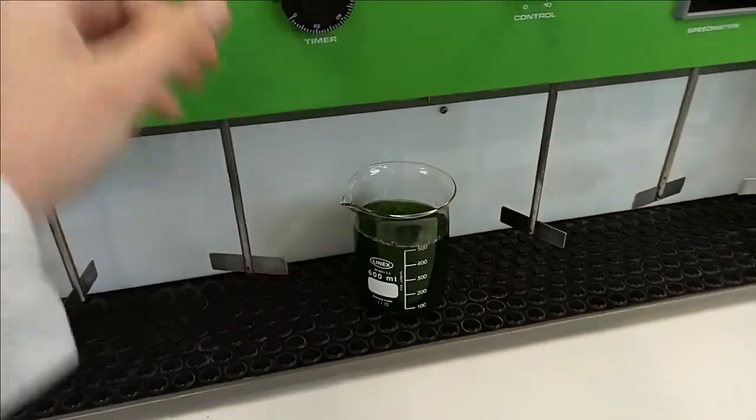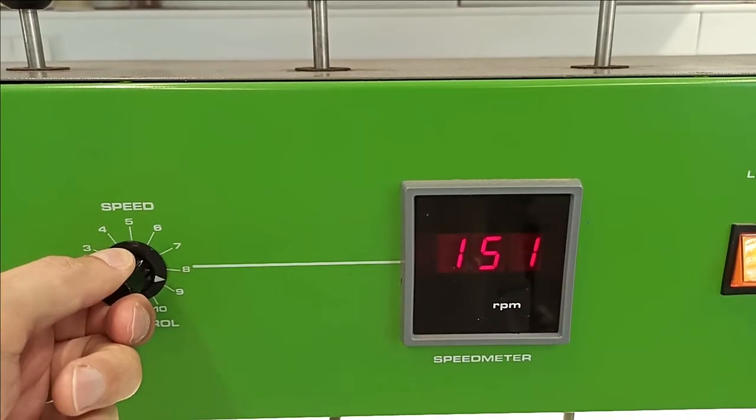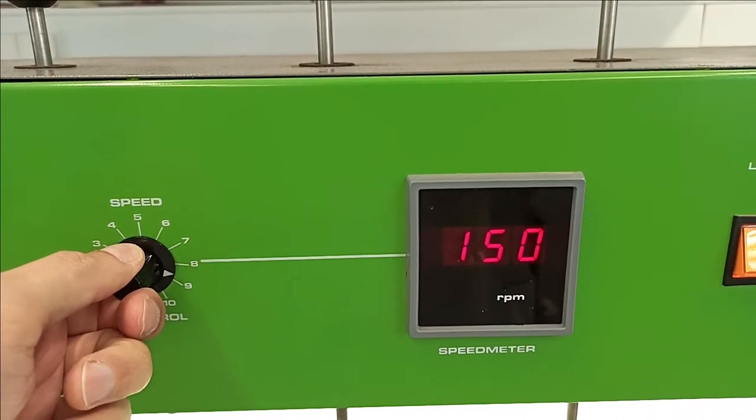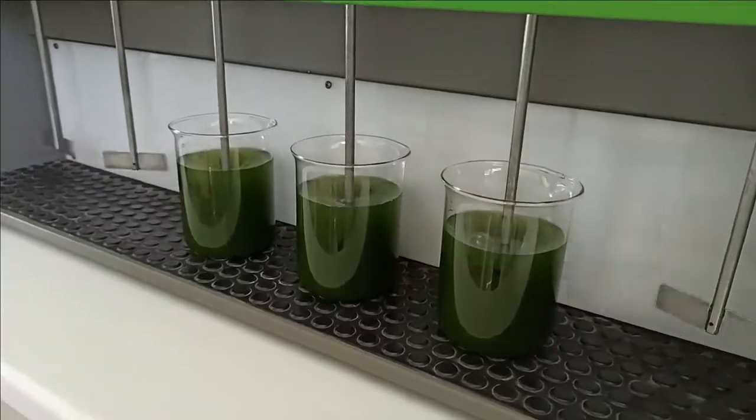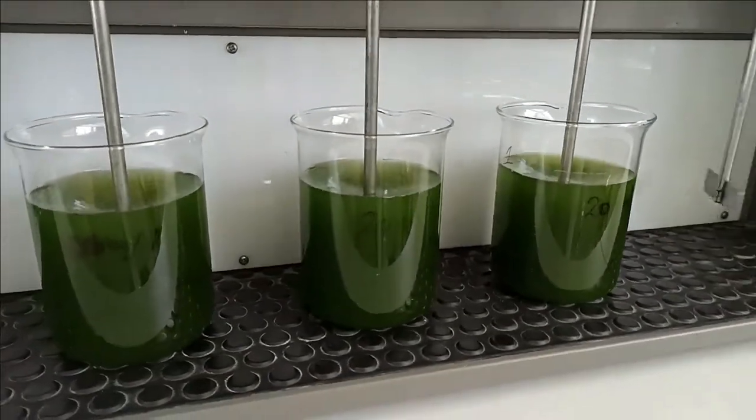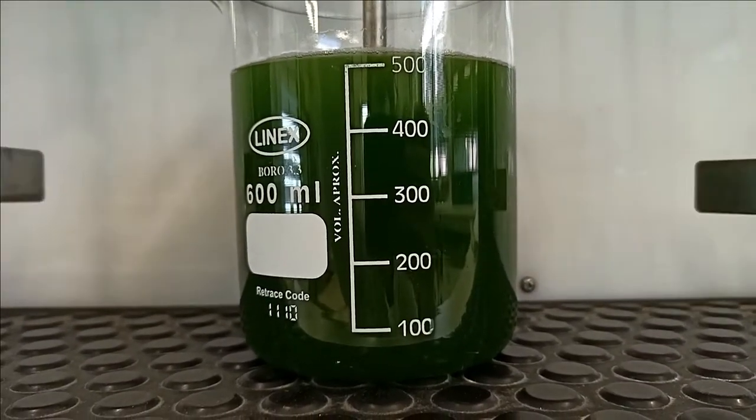The glass beakers are then placed in the JAR test and mixing set to 150rpm. The addition of the flocculant should be first followed by fast agitation to promote a good dissolution and dispersion of the flocculant.